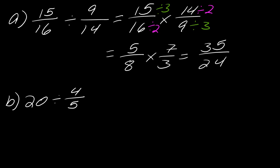So, for B here, I'm going to rewrite this as 20 over 1 times 5 over 4.